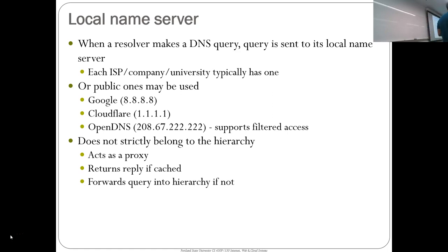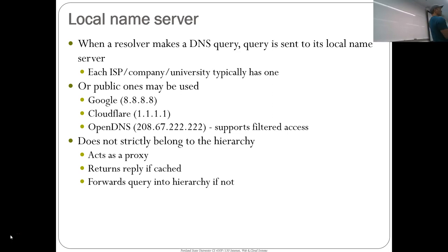Regarding why someone would use 1.1.1.1 instead of the university DNS: it's not necessarily a performance reason, though 1.1.1.1 does have low latency. If you are suspicious of your workplace — maybe you think someone is monitoring all your DNS requests — then you might choose differently. We'll talk about privacy issues with DNS because all of these requests are done in the clear; everyone can see everyone else's DNS requests right now.